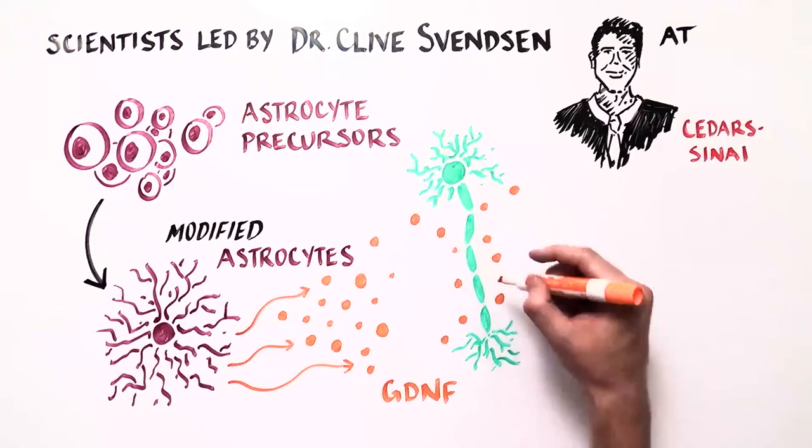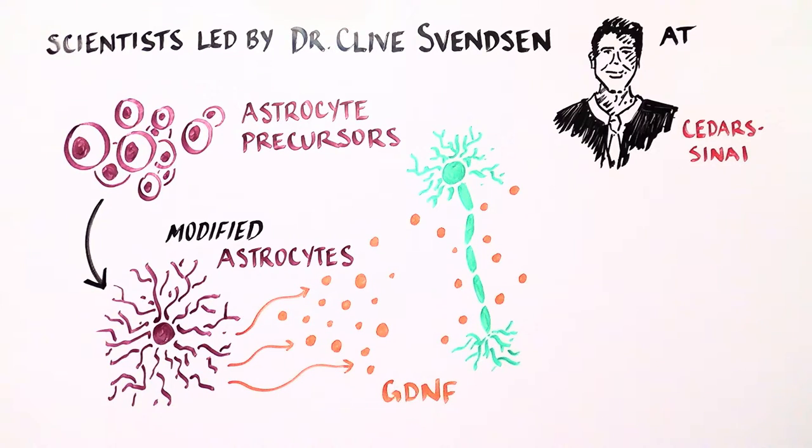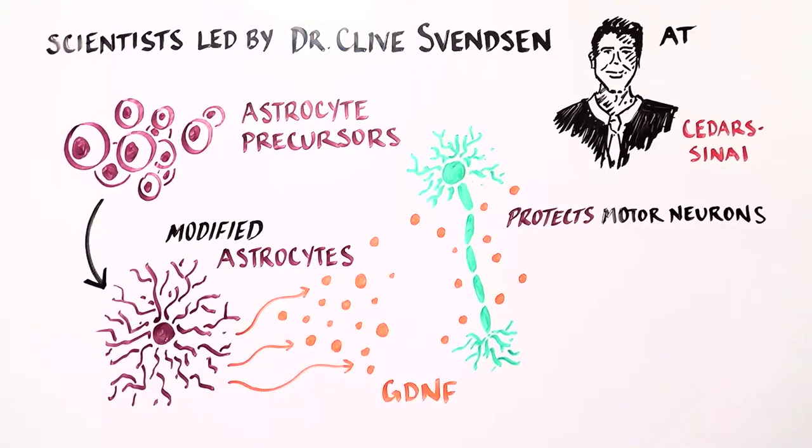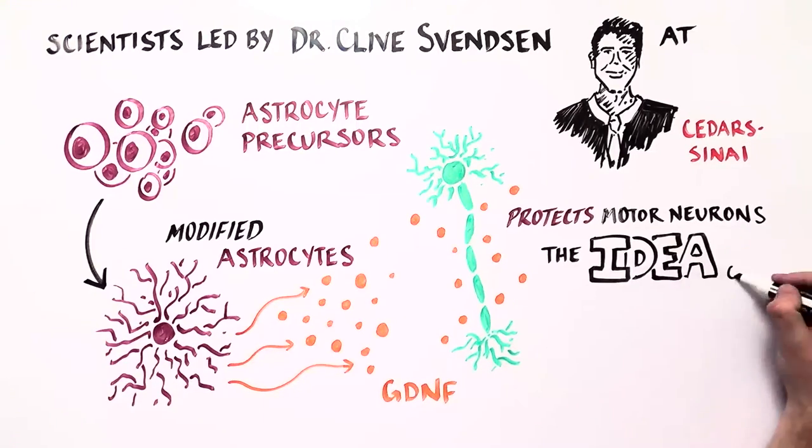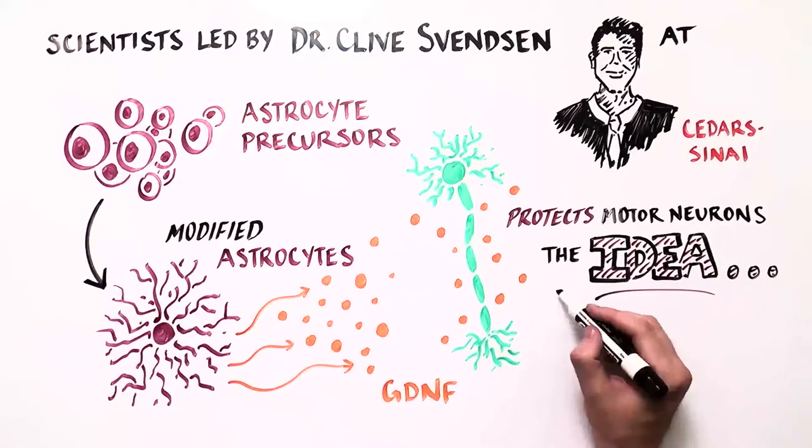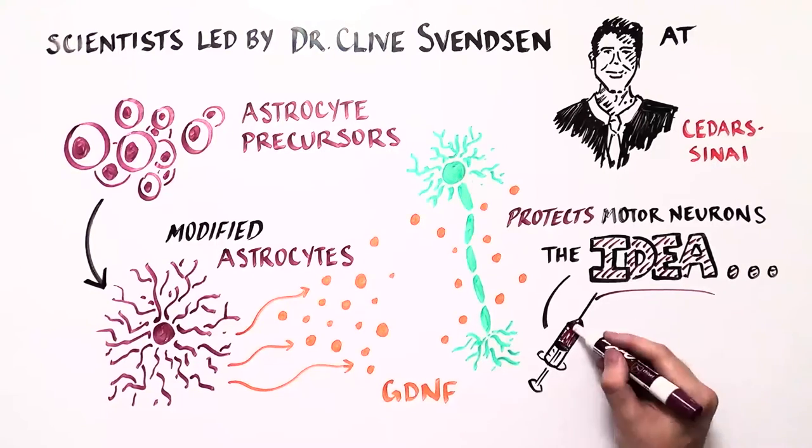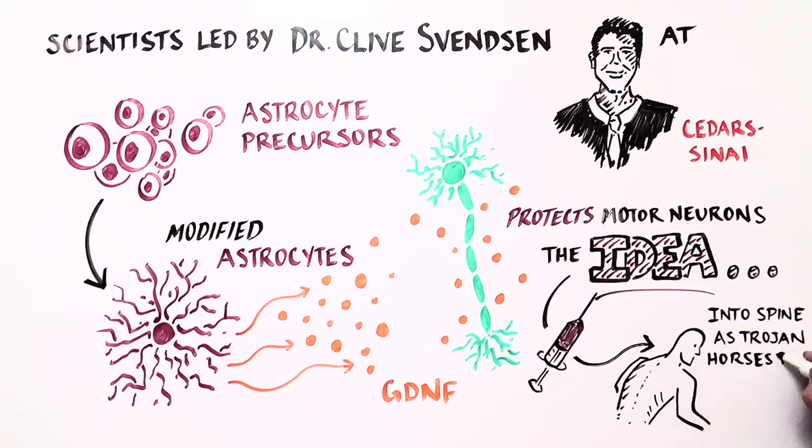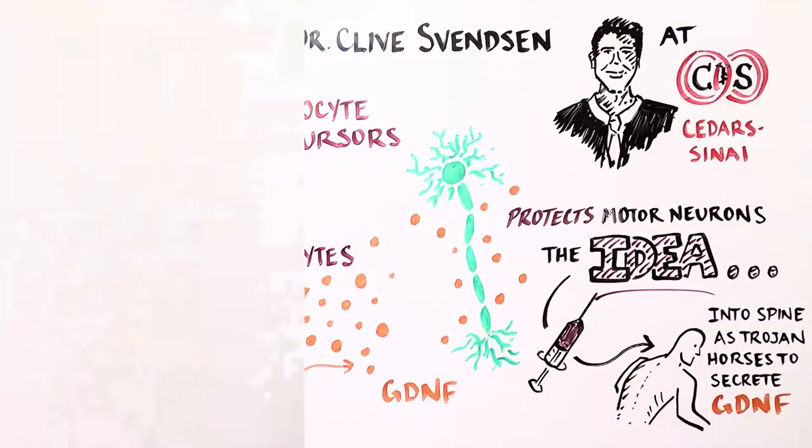GDNF has been shown in laboratory animals to protect motor neurons. The idea behind Cedars-Sinai's approach is to introduce these modified neural precursor stem cells into the spinal cord where they would act as Trojan horses to introduce the protective growth factor GDNF at the site of motor neuron injury.